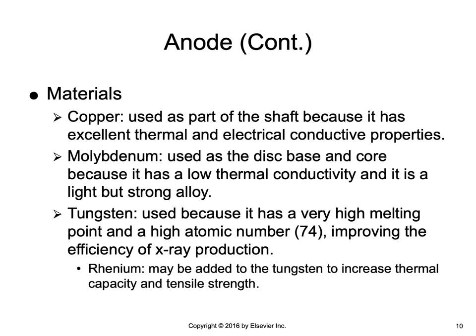Copper is used as part of the shaft because it has excellent thermal and electrical conductive properties. Molybdenum is used as the disc base and core because it has low thermal conductivity, which slows the migration of heat into the rotor bearings and minimizes heat damage; it is also a light but strong alloy, making it easier to rotate the anode. The target material coating is made of tungsten because it has a very high melting point of 3,400 degrees Celsius (6,152 degrees Fahrenheit), a thermal conductivity almost equal to copper, and a high atomic number of 74 that improves x-ray production efficiency. Rhenium may also be added to the tungsten to increase thermal capacity and strength.